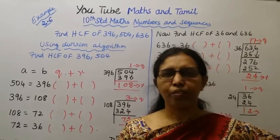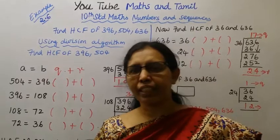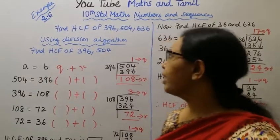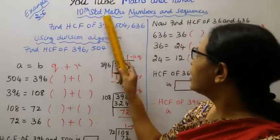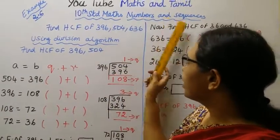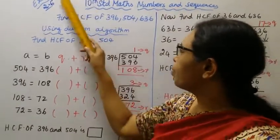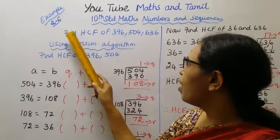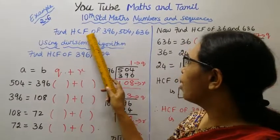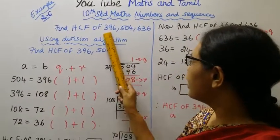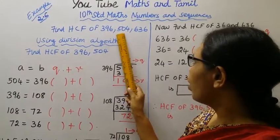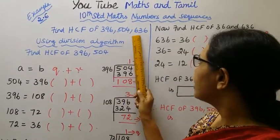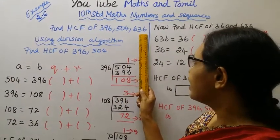Hello students, welcome to Max and Tamil channel. 10th standard maths: numbers and sequences, example 2.6. Find HCF of 396, 504, and 636.